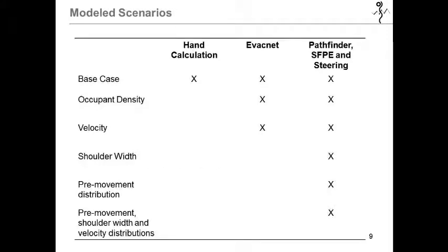So here you see the scenarios that were run. The base case used each method, while occupant density were varied for EvacNet and Pathfinder at constant values. Pathfinder also allowed for the addition of shoulder width and the addition of distributions, where pre-movement distributions were looked at individually. And then finally, scenarios were run with pre-movement, shoulder width, and velocity all distributed.